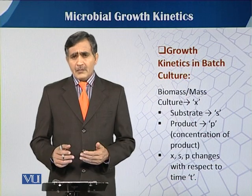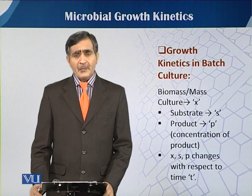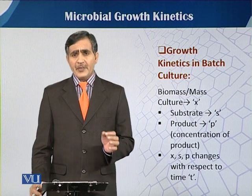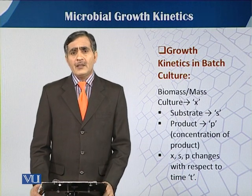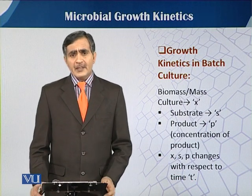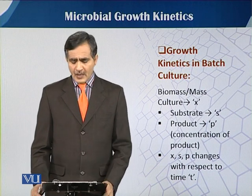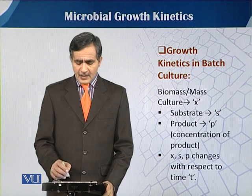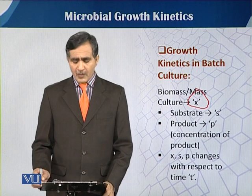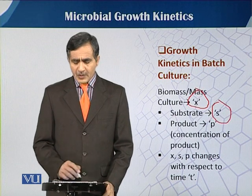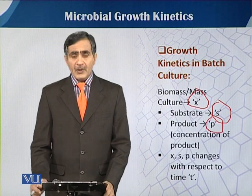Before talking in detail about growth kinetics in batch culture, we should know the different symbols we use: X is used for biomass, S is used for substrate, and P is used for the product. In this slide you can easily see these different symbols.